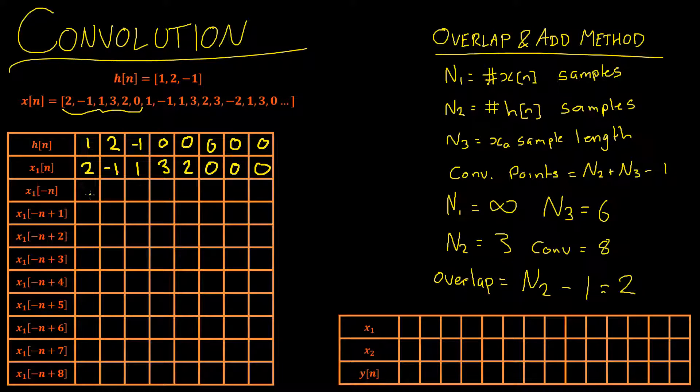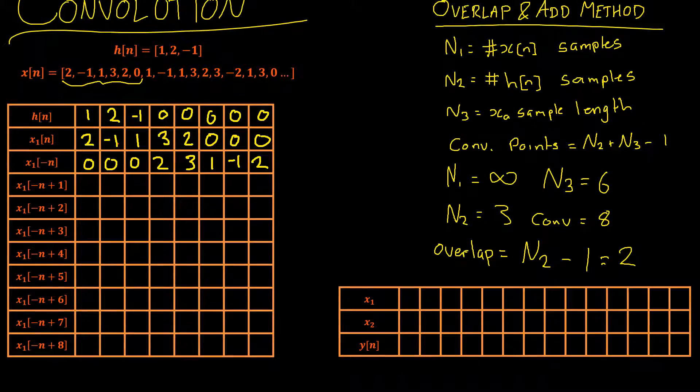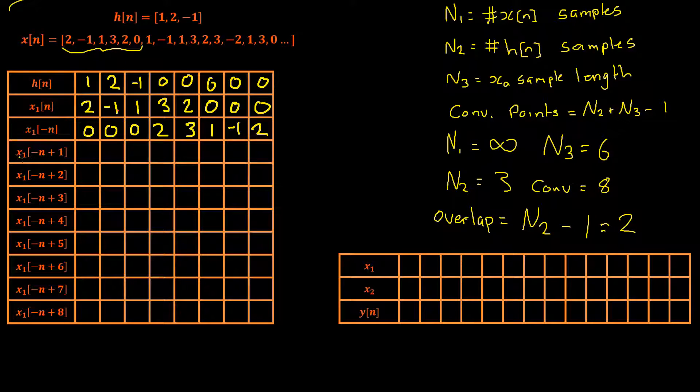We'll take the negative n of this signal which is the same as reversing it, and then a small difference between the convolution and the correlation is that we don't take our first output sample from our negative n term. We take it from our negative n plus 1 and that will be the same for all of the chunks that we calculate the convolution for. So let's calculate our x of 1 negative n plus 1 which is essentially shifting this signal 1 to the right and then calculate the output from that.